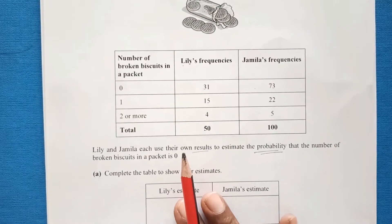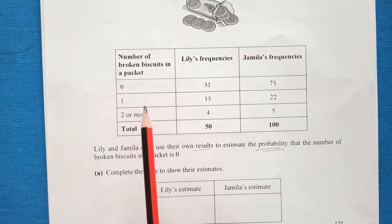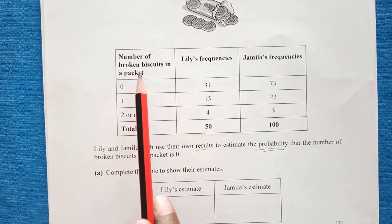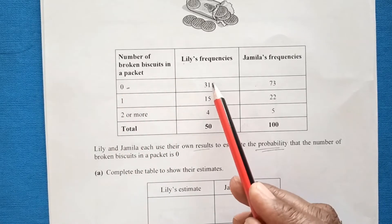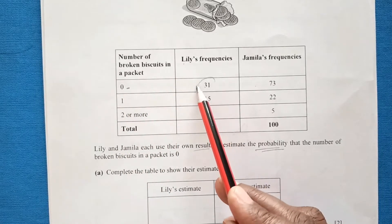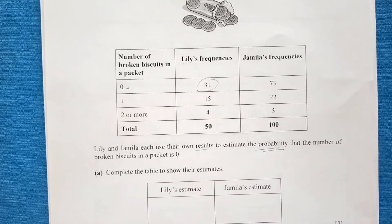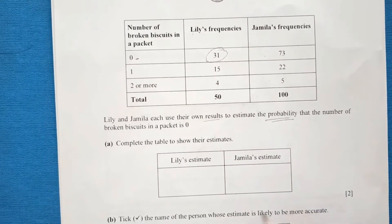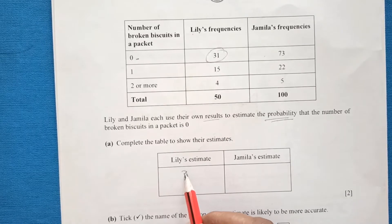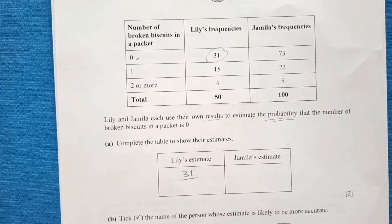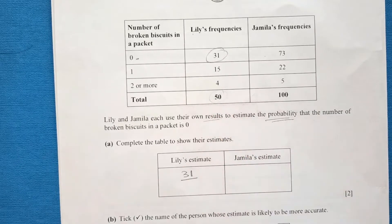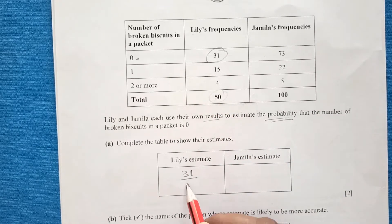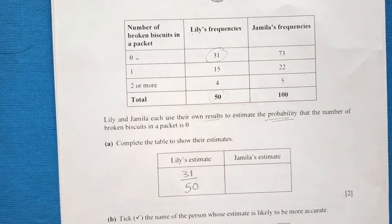We look for the number of packets with 0 broken biscuits. Lily's frequency is 31, so her estimate will be 31 out of 50 packets she opened in total. The answer is 31 over 50.